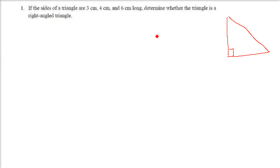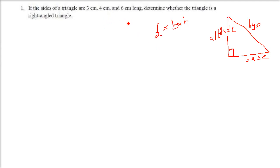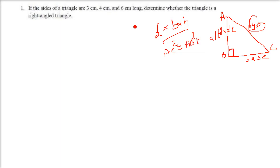The side opposite to the 90 degree angle is the hypotenuse. This is the base, and this could also be the base, and this is the altitude. The area will be half into base into altitude. According to Pythagoras theorem, if we say ABC, then AC square will be equal to AB square plus BC square. This we are going to employ.